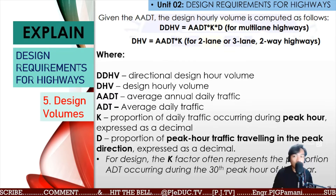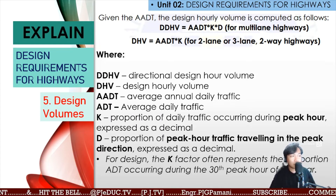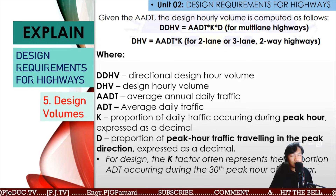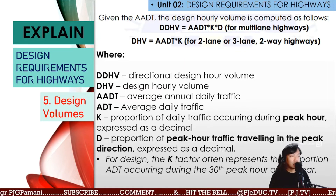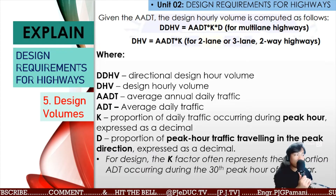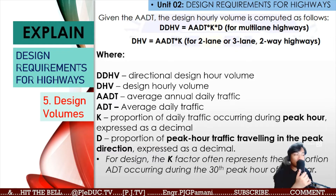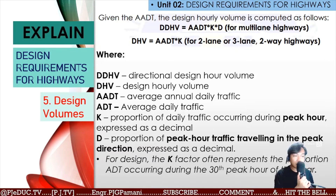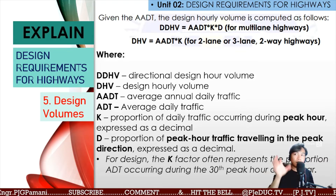The abbreviations are: DDHV is your Directional Design Hour Volume; DHV or Design Hourly Volume; AADP is the Average Annual Daily Traffic; ADT is the Average Daily Traffic; K is your peak hour factor; and D is the proportion of peak hour traffic traveling in the peak direction.